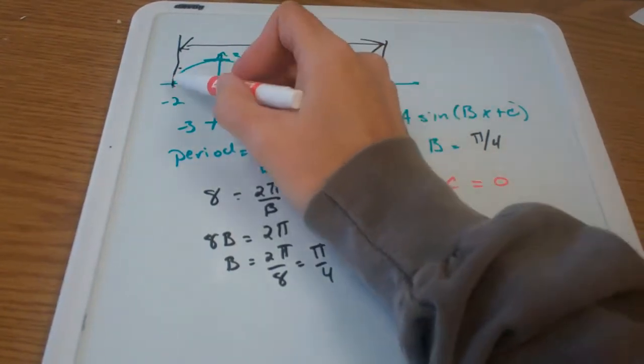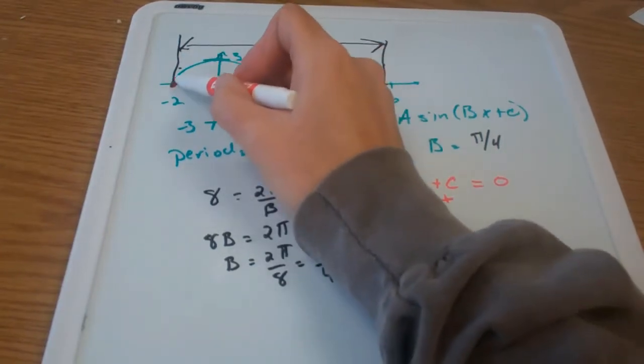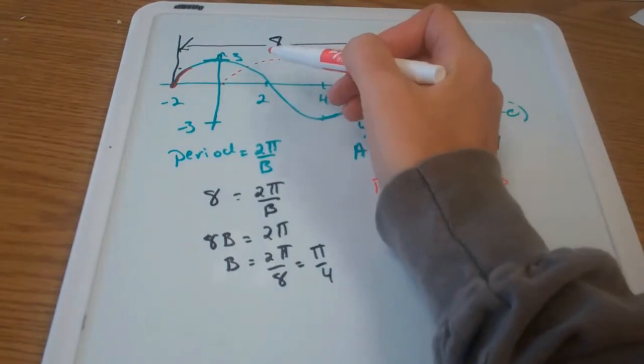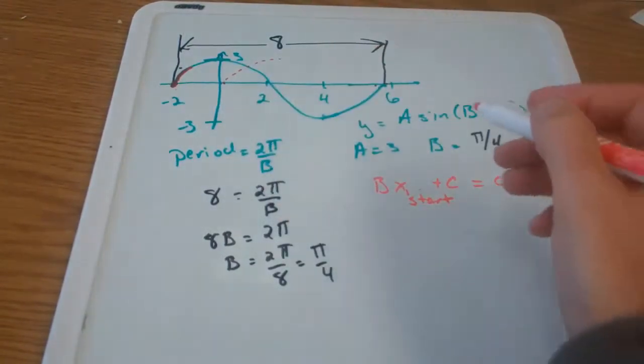What I want to know is this x right here, that's where the sine curve is starting. So my x-start is negative 2.